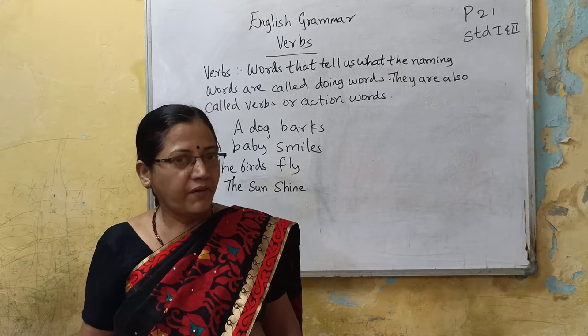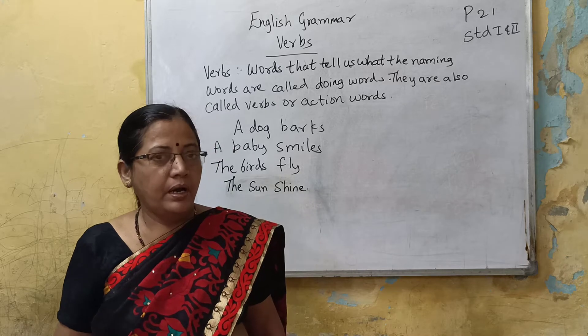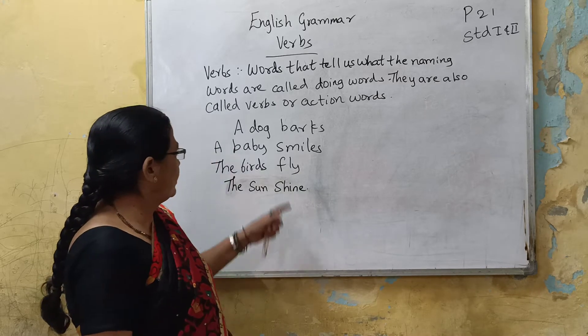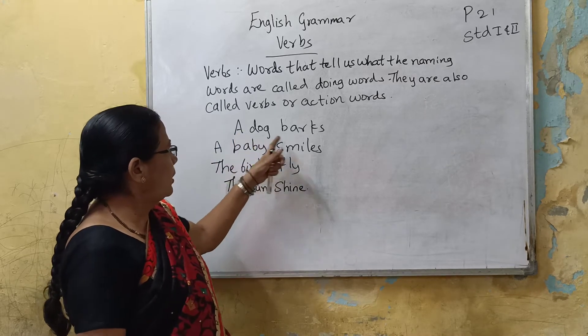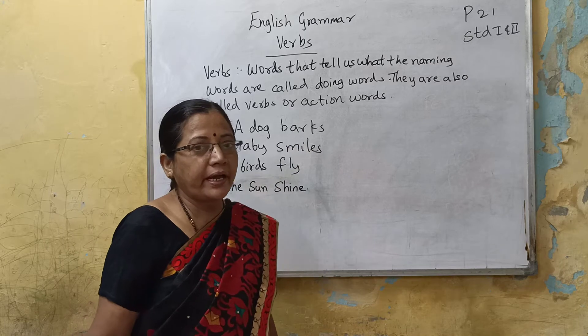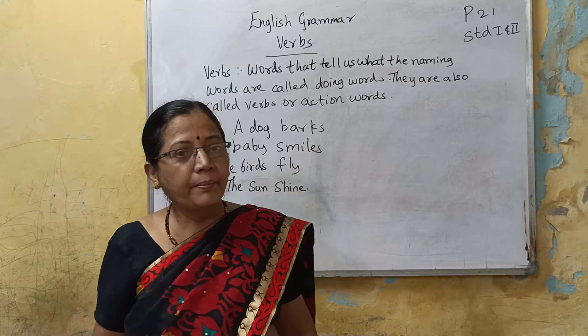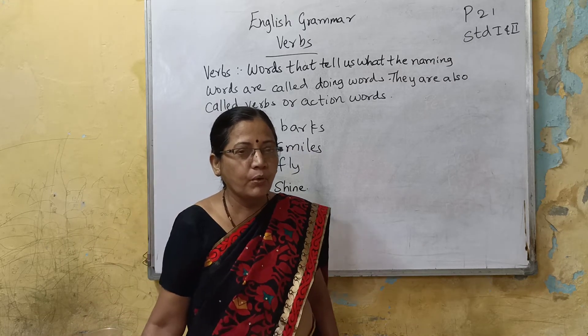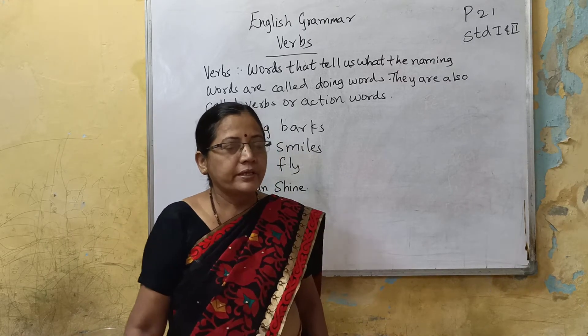What is verb? For example, a dog barks. What is verb? Bark. Bark means to make a sound.